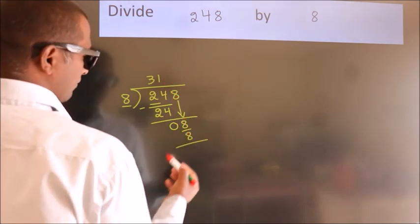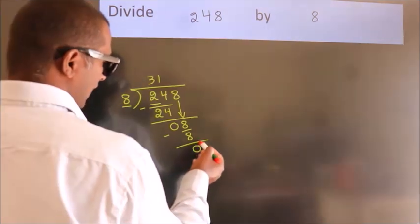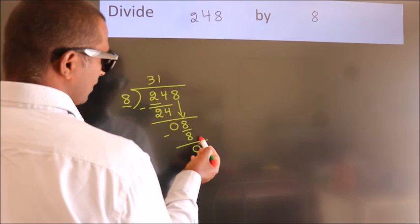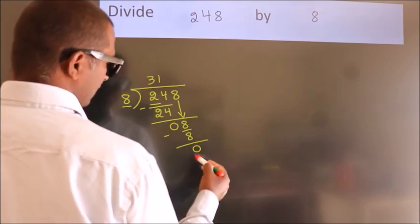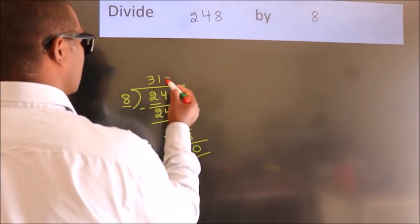Now, we subtract, we get 0. After this, no more numbers to bring down, and we got remainder 0. So, this is our quotient.